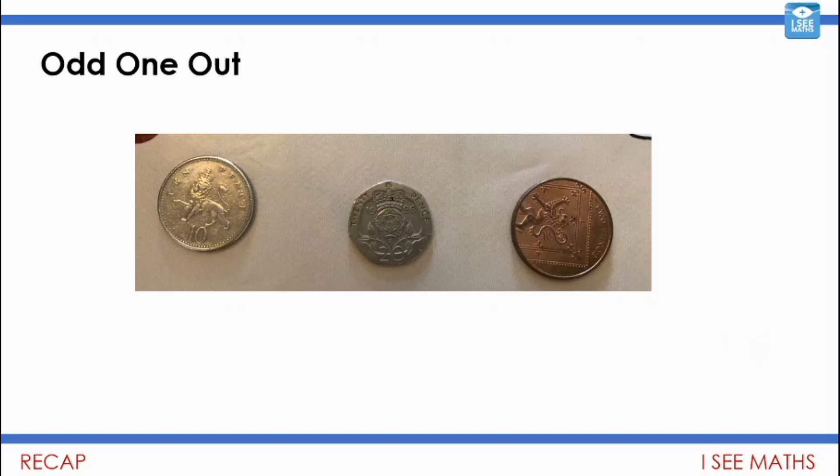I wonder which reasons you came up with. Well I'll tell you what my ones were. I thought the 10p is the odd one out because it doesn't have the digit 2 anywhere on the coin. I thought the 20p is the odd one out because it's not circular. I thought the 2p was the odd one out because it's a copper coin. I wonder what you saw there.